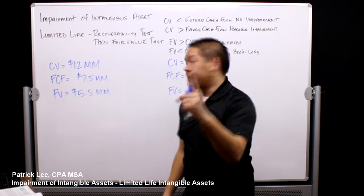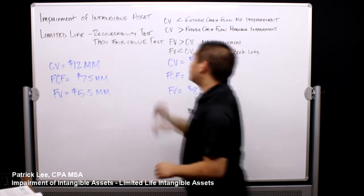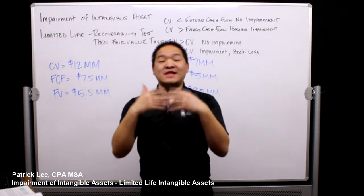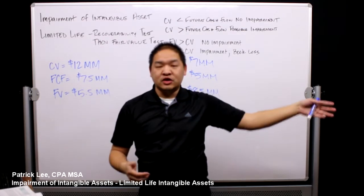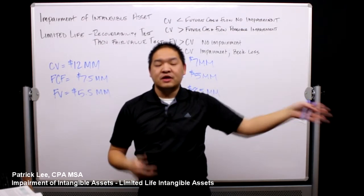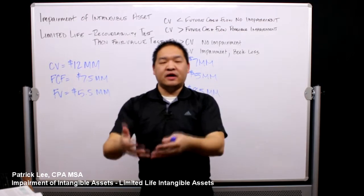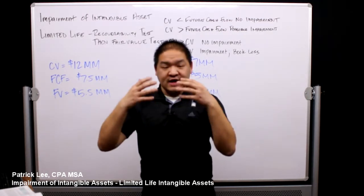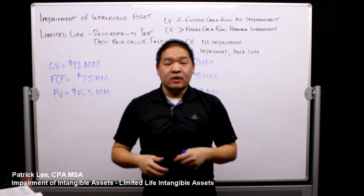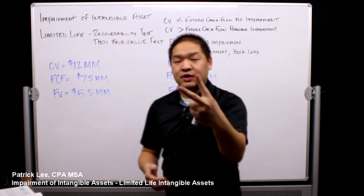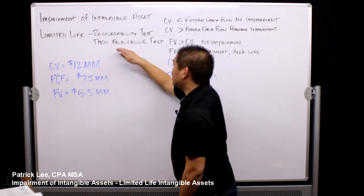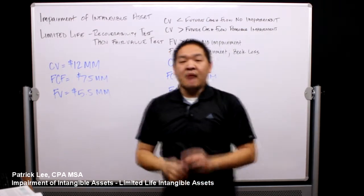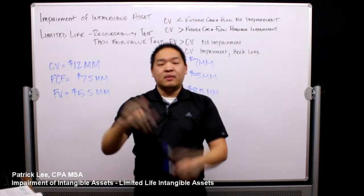Step number one is we're going to use the recoverability test to see if we can recover enough future cash flows to offset our carrying value. If it doesn't pass, then we will move on to step two, which is the fair value test.